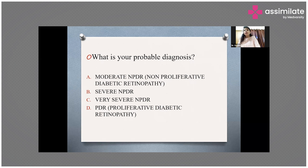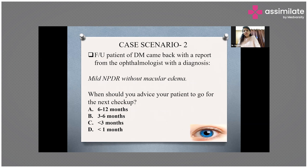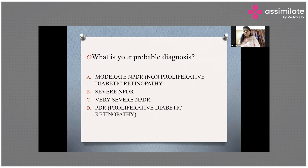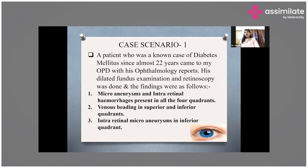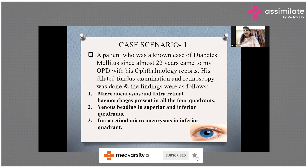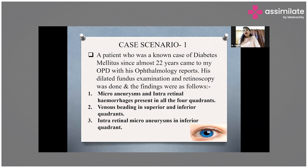Going back to case scenario one: the patient had micro aneurysms and intraretinal hemorrhages in all four quadrants, venous beading in the superior and inferior quadrants, and intraretinal microvascular abnormalities in the inferior quadrant. All three characteristic features are present in this patient, so this patient is categorized into very severe NPDR.